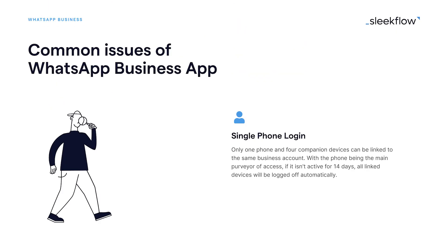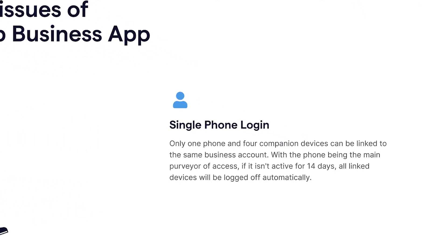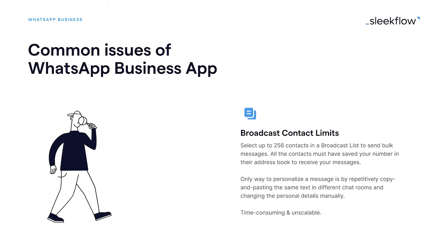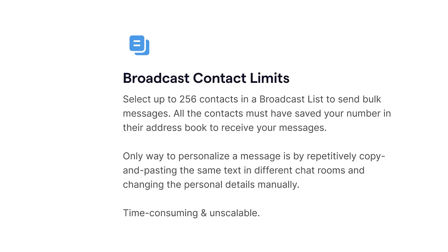Some common issues with the WhatsApp Business native app is that it has to be installed on one smartphone, and up to four companion devices can be linked to the same account. But if the original smartphone that has WhatsApp installed isn't active for 14 days, all linked devices will be logged off automatically. Besides, you can only select up to 256 contacts in a broadcast list to send bulk messages.